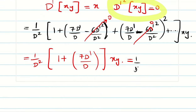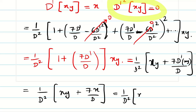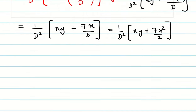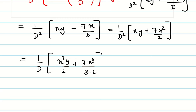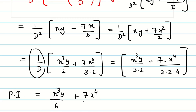Proceeding with (1/d square): when I multiply, I get (1/d square) of x y plus 7 times d dash of x y divided by d. d dash of x y is simply x, so it becomes (1/d square) of x y plus (7x/d). Integrating with respect to x: 7x squared by 2. Now proceeding with the full integration: integrating x y gives x squared y by 2, and integrating 7x squared/2 gives 7x cubed by 6. Integrating again: x cubed y by 6 plus 7x power 4 by 24.